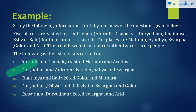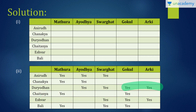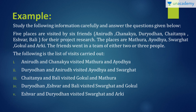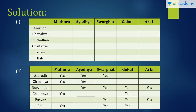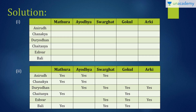Next clue: Duryodhan and Anirut visited Ayodhya and Swargaat. Ayodhya was already yes for Anirut, so I put yes against Swargaat. Next: Chaitanya and Bali visited Gokul and Mathura — marked accordingly. Next: Duryodhan, Ishwar and Bali visited Swargaat and Gokul — all three marked yes for both. Next: Ishwar and Duryodhan visited Swargaat and Arki. Swargaat was already yes for both, so I put yes for Arki for each. Now all the clues are done and the table is complete.